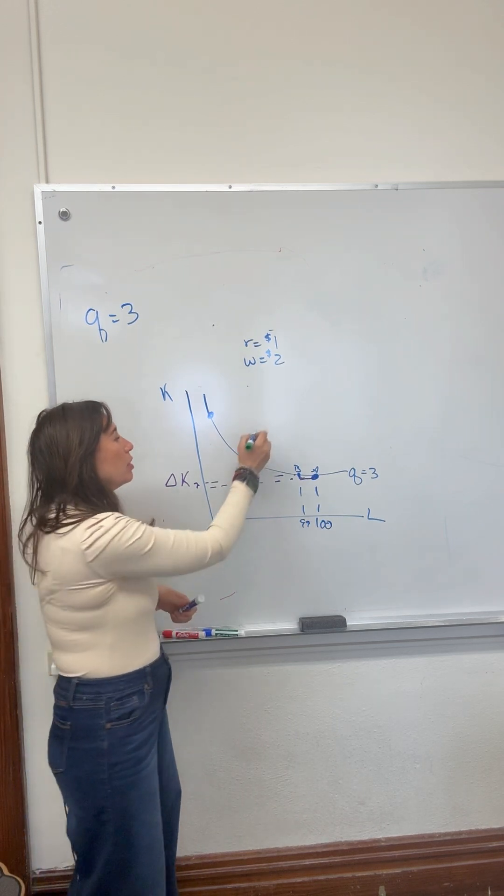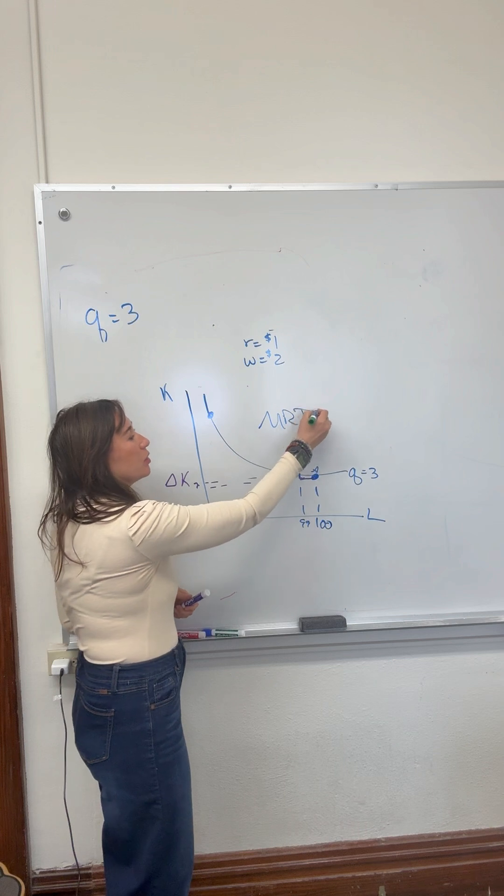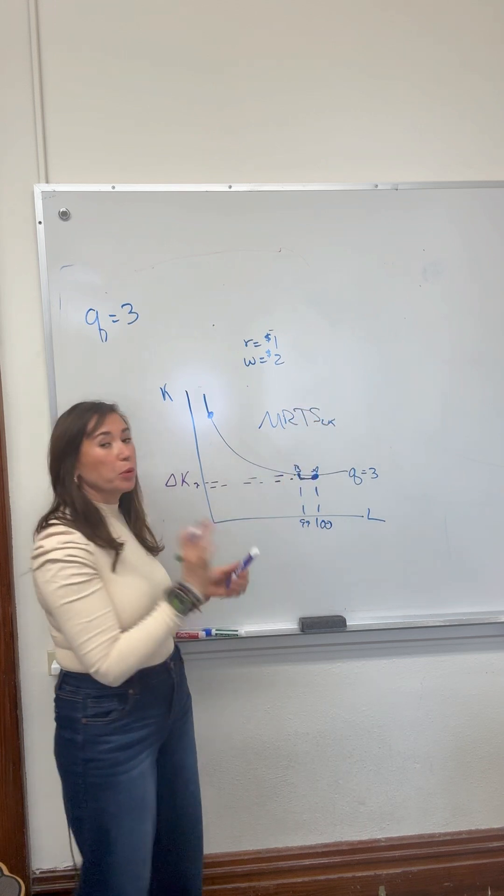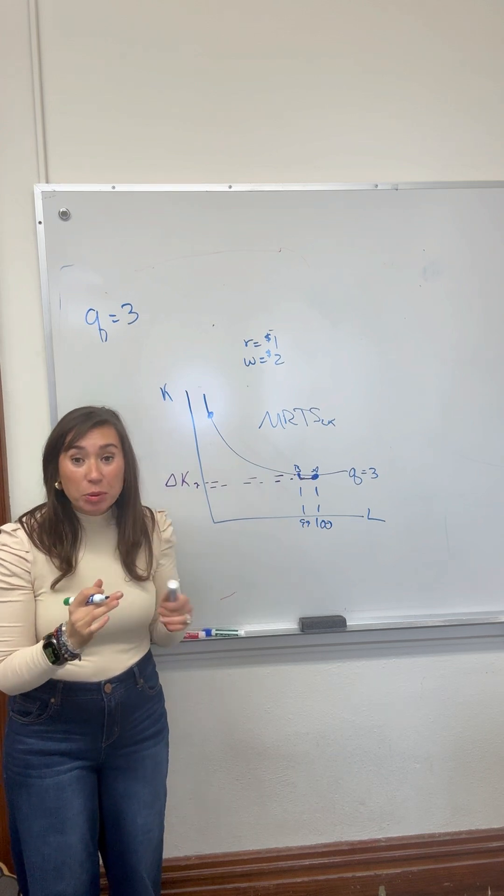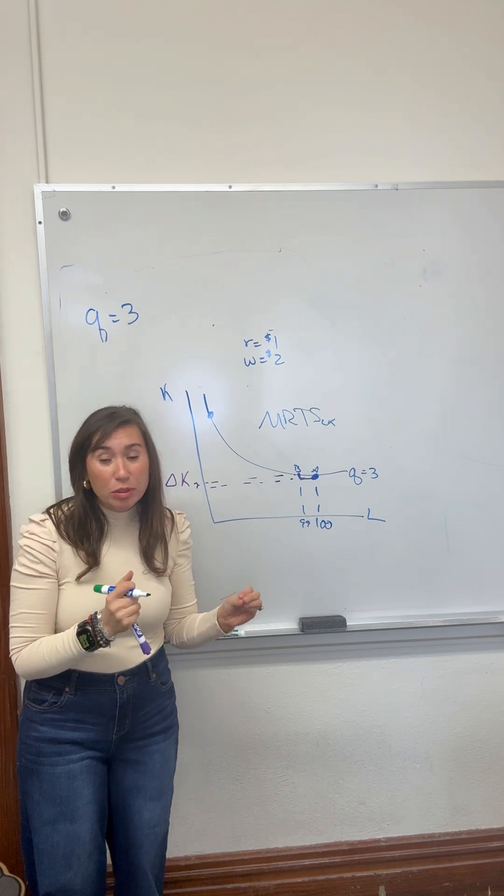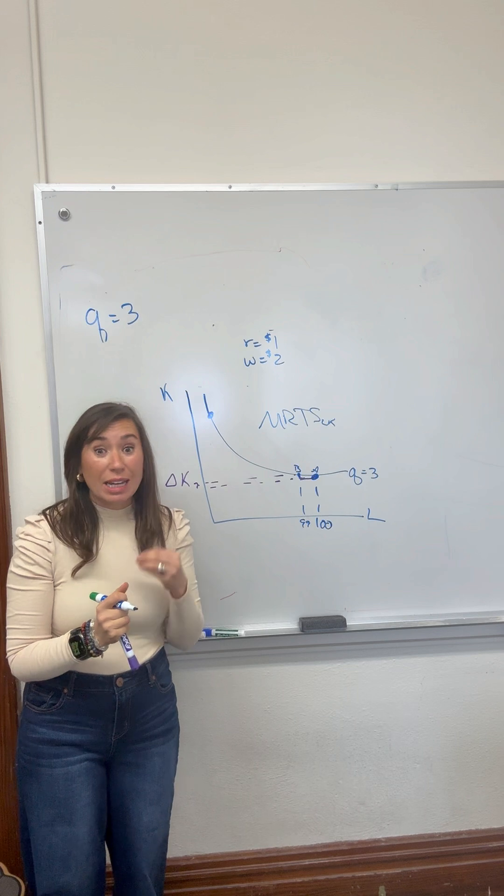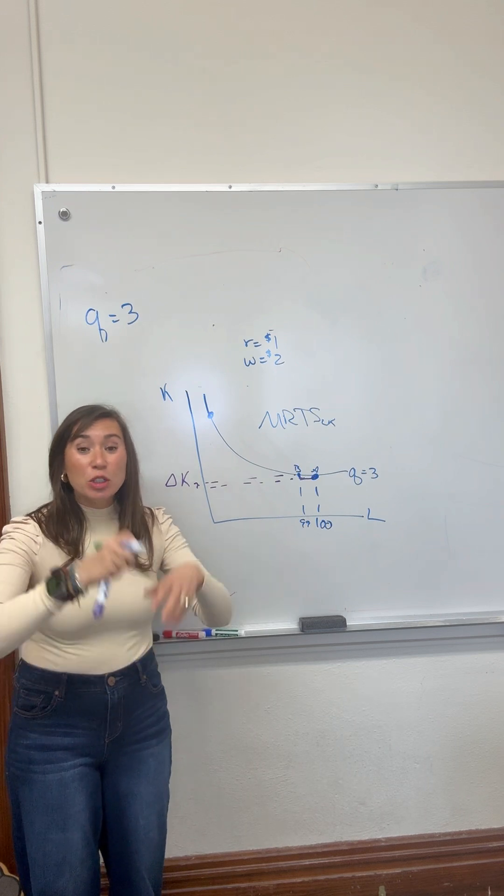That's known as the marginal rate of technical substitution between labor and capital, which is a mouthful. But all it means is something very intuitive. If labor is really valuable, in order to replace that last labor, you're going to have to have a huge delta K.